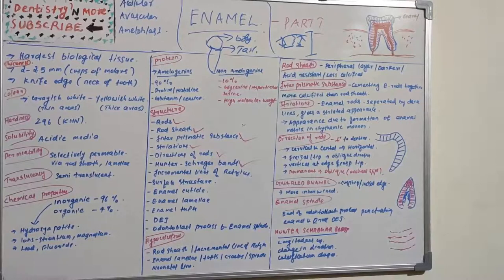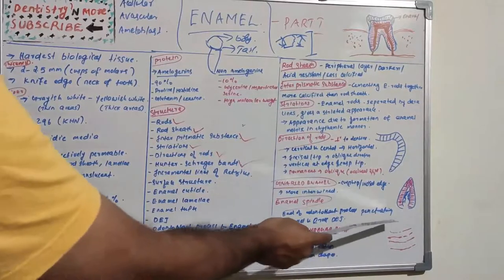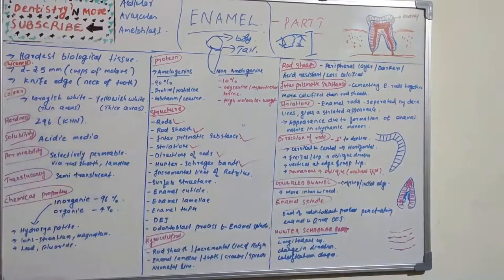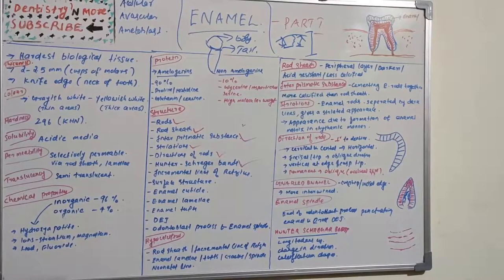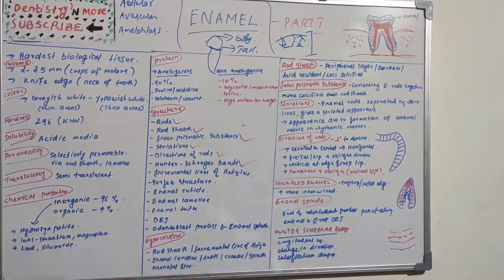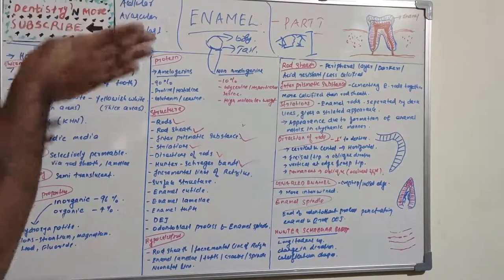Hunter-Schreger bands are regular changes in direction of rods responsible for the appearance of alternating dark and light strips of varying width. In cross sections of teeth, we can see dark and light lines — this alternating dark and light appearance is due to the change in direction of enamel rods. It is most commonly seen in longitudinal ground sections.